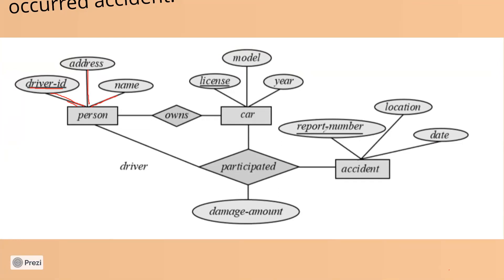There are some attributes of the accident: report number, location, date, and other attributes. There are also attributes of the car and attributes of the person. It depends on you what attributes you keep. Then for the person who has a particular car accident, we have bound all of the common relationships.